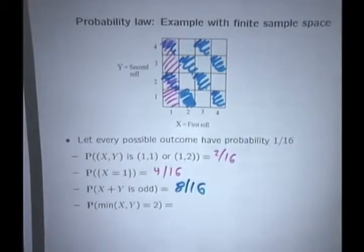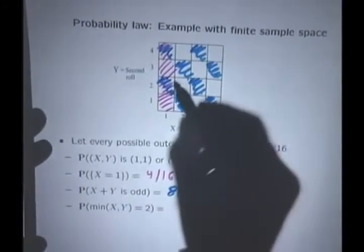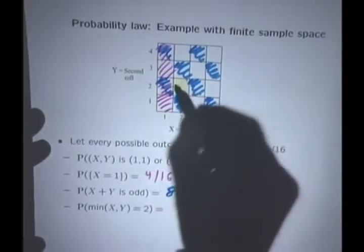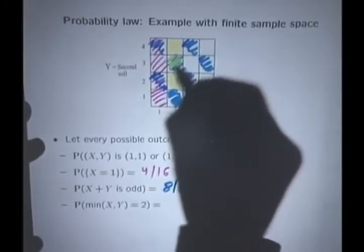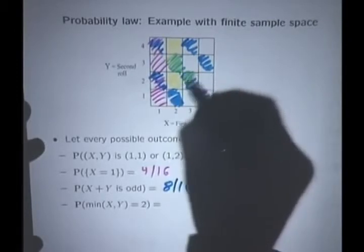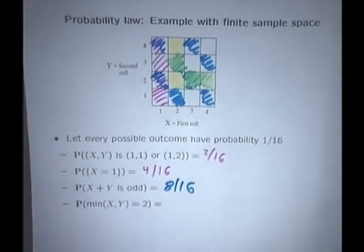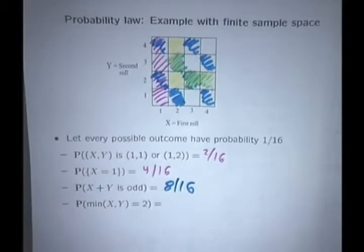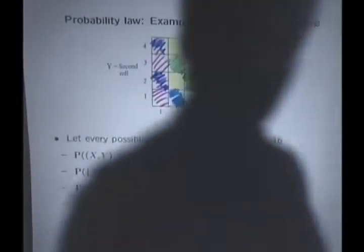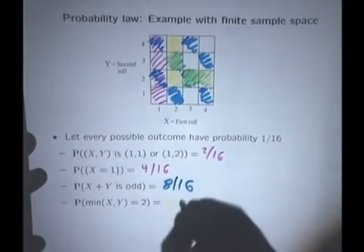So the minimum is equal to 2 if both of them are 2s, and/or it could be that X is 2 and Y is bigger, or Y is 2 and X is bigger. Okay, I guess we rediscover that yellow and blue make green. So we see here that there's a total of five possible outcomes. The probability of this event is 5 over 16. Simple example.